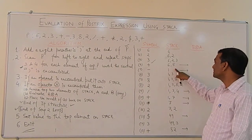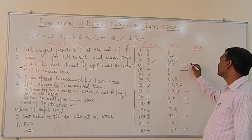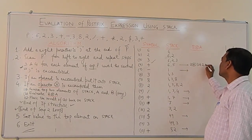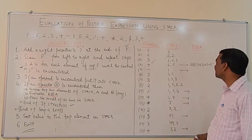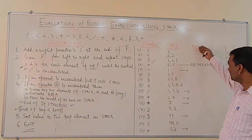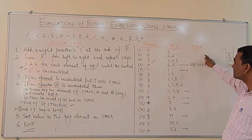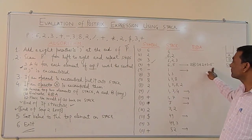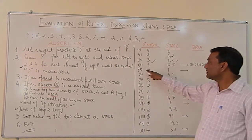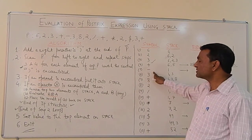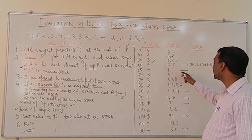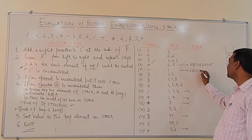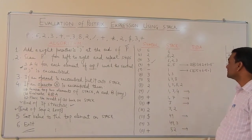As soon as we get the plus operator, we find B operator A: A is 3 (top), B is 2, so 2 plus 3 equals 5. The stack becomes 6, 5. The fifth element is minus. We apply it: 6 minus 5 equals 1. The stack becomes 1.